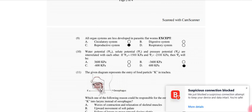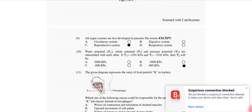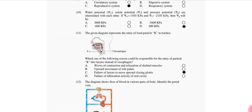General properties: Water potential, solute potential, and pressure potential are interrelated with each other. If water potential is negative, solute potential and pressure potential, then we will calculate. So that is minus 600 kPa. The given diagram represents the entry of food particles into trachea. Which of the following reasons could be responsible for entry of particles into the larynx instead of esophagus? That is failure of larynx to move upward closing glottis.